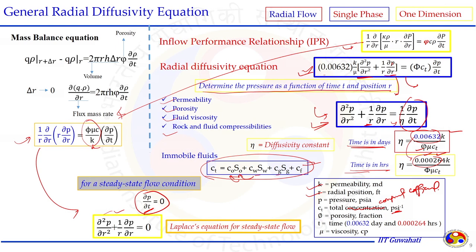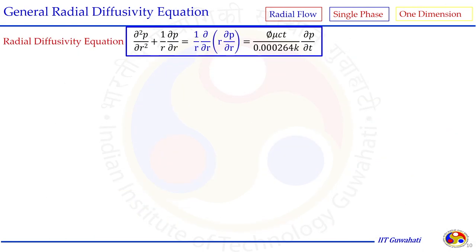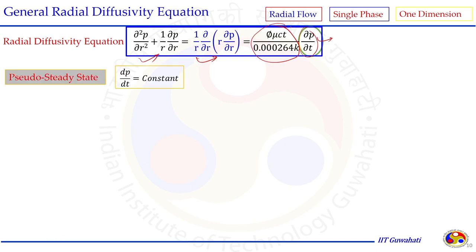For steady state flow condition, the right-hand side equals zero because the change in pressure with respect to time is zero. This simple form of the radial diffusivity equation is called the Laplace equation for steady state flow. We thus get the Laplace equation for steady state single phase fluid flow in the radial direction, and we have established the expression for the diffusivity coefficient η appearing in this general radial diffusivity equation.